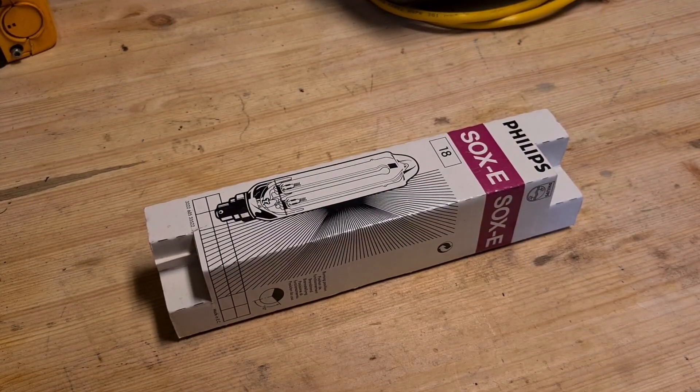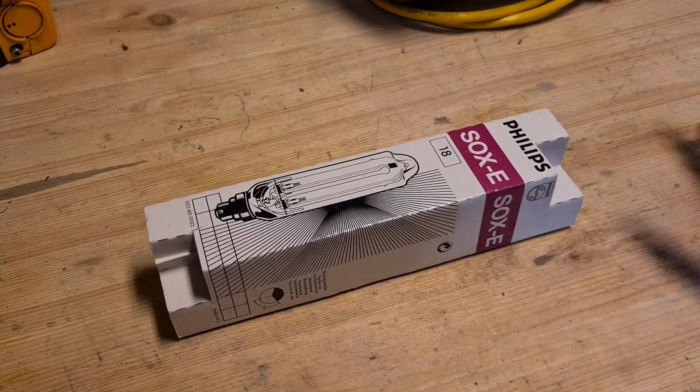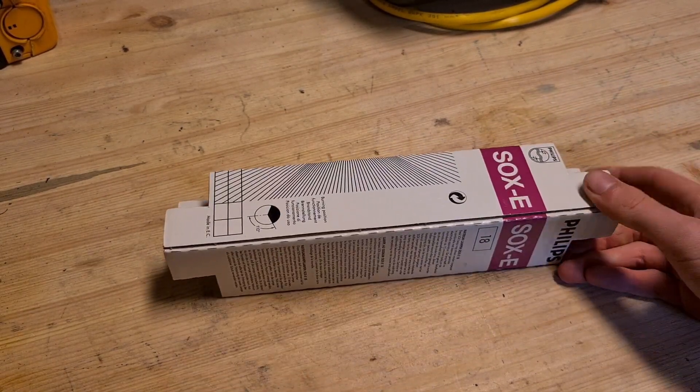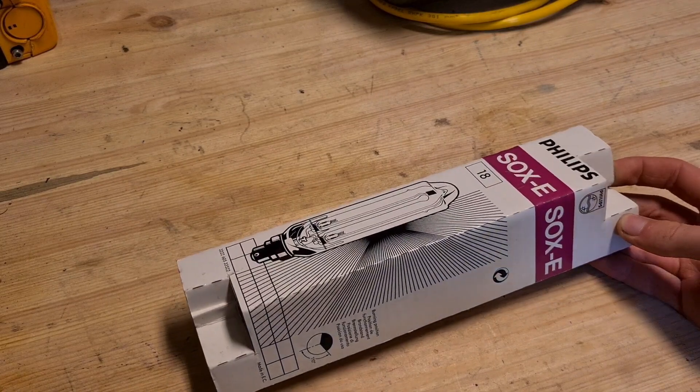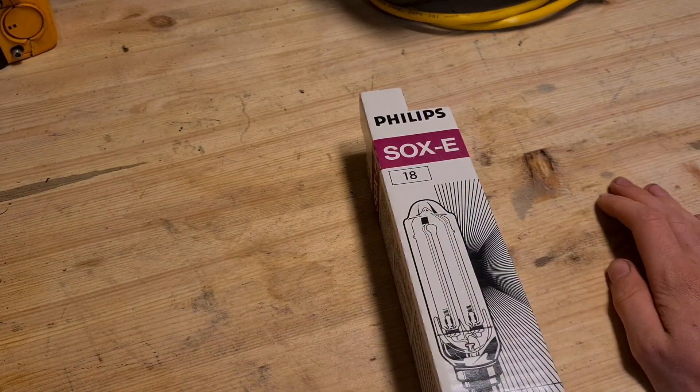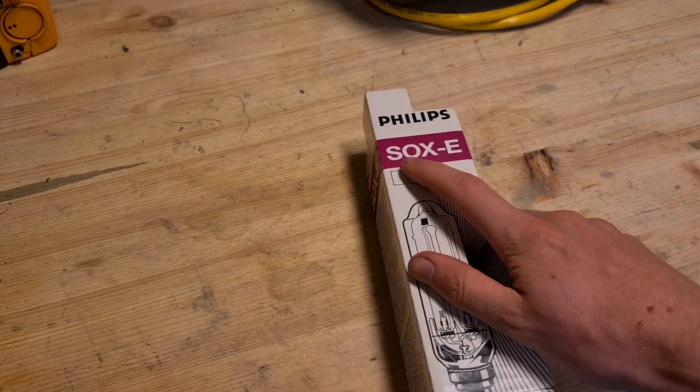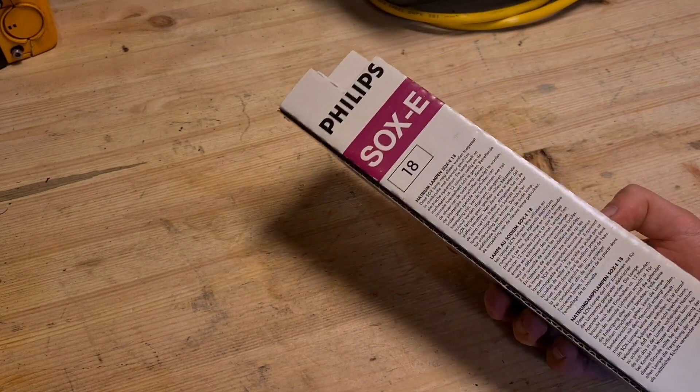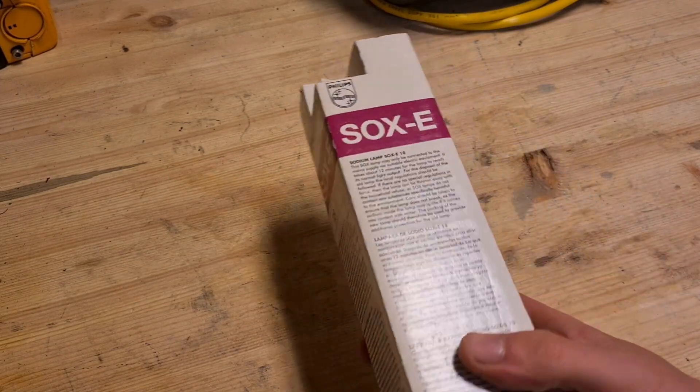Hello everybody, welcome back to a new video. Today it's time to take a look at this Philips low-pressure sodium bulb. This Philips low-pressure sodium bulb uses 18 watts, called SOX-E in the Philips language.